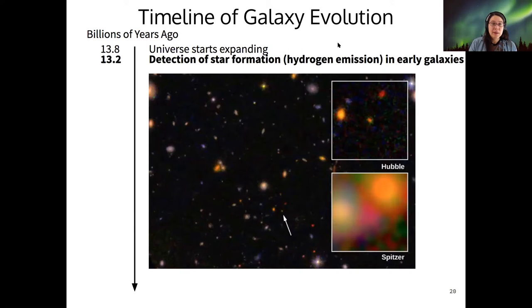The next major event is the earliest detection of star formation that we have. Your book discusses this, that hydrogen emission from very early galaxies indicates star formation. This hydrogen emission is what we usually see nearby as those red emission nebulae that indicate stars are lighting up clouds of gas. This happened at 13.2 billion years ago, so we know for sure that there were galaxies all the way back at that time.